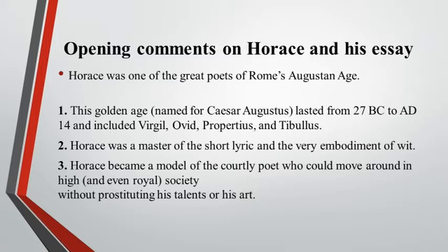This Golden Age included not only Horace, but Virgil, who wrote the Aeneid, Ovid, and lyric poets Propertius and Tibullus, among others. Horace, who was almost a leader of the group, was a master of the short lyric and the very embodiment of wit. He was not given to long epic works like the Iliad and the Odyssey. He liked short lyric pieces that were very witty and had lots of turns of phrase. Horace is a poet who suffers greatly in translation because he likes to play on words — you really need to know Latin to appreciate him.